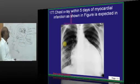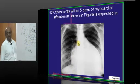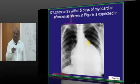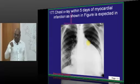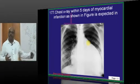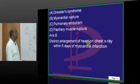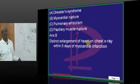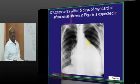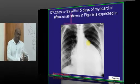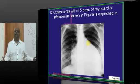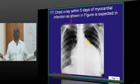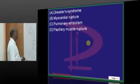A chest X-ray five days after myocardial infarction shows significant cardiac dilatation. MI can lead to ischemia of the papillary muscles — papillary muscle injury leads to mitral regurgitation, which puts acute volume overload on the heart causing dilatation. Within five days, this suggests the ischemia was so severe that the ventricular myocardium became very thin, leading to rupture — an example of a truly 'broken heart' state.